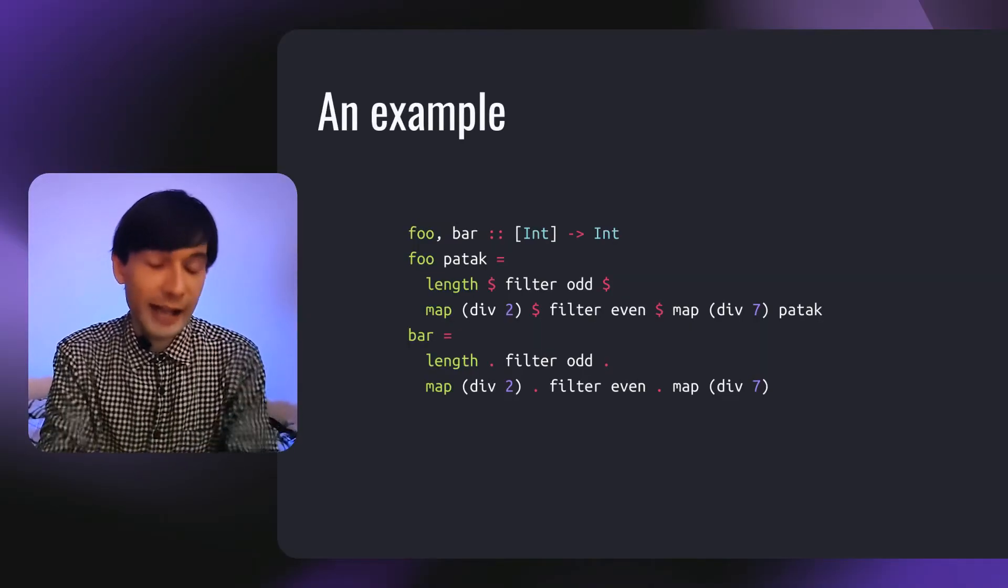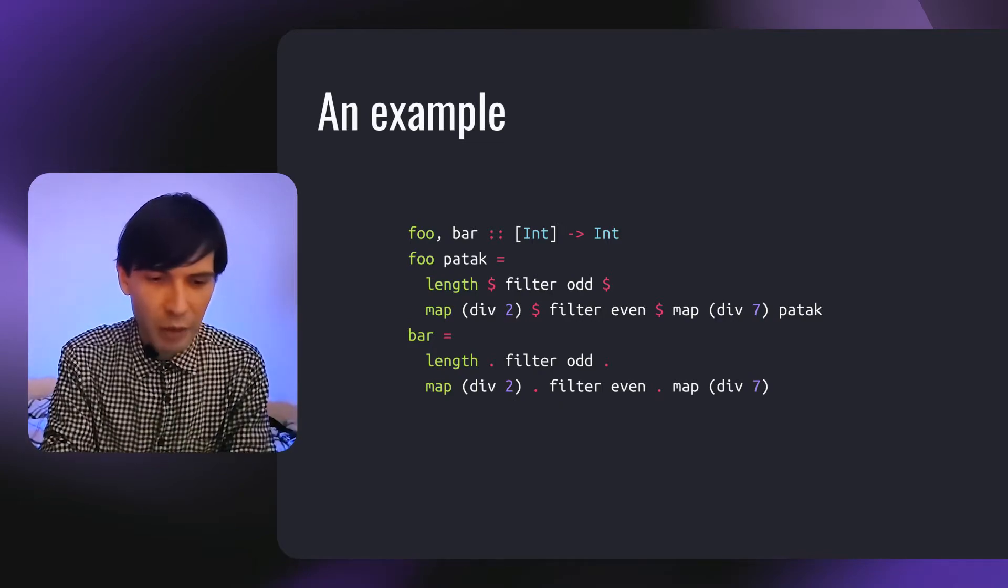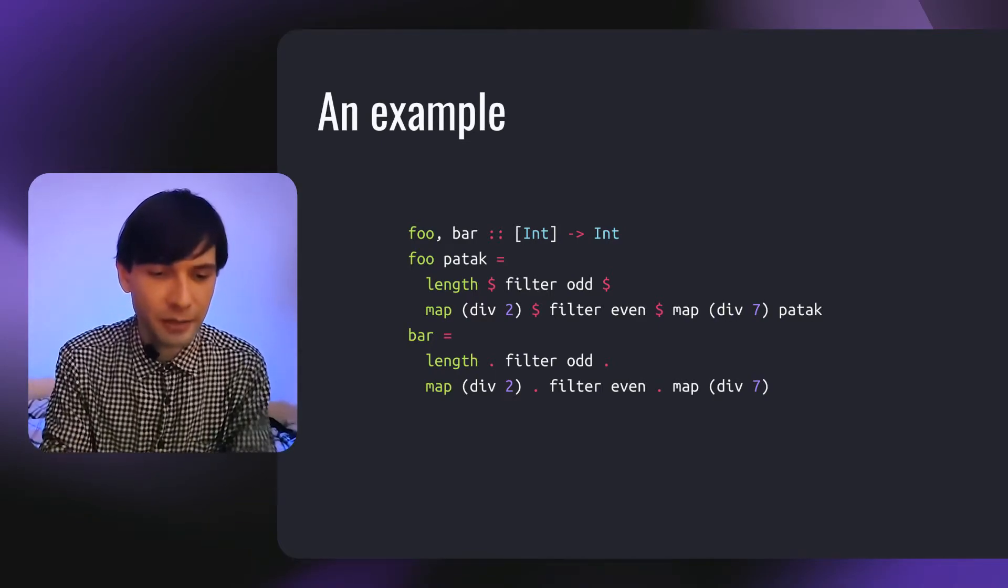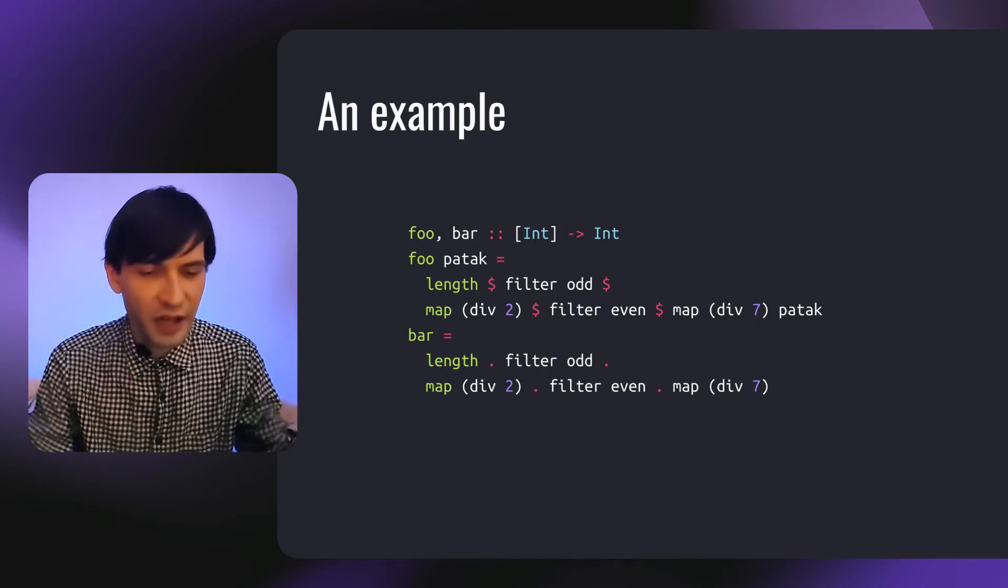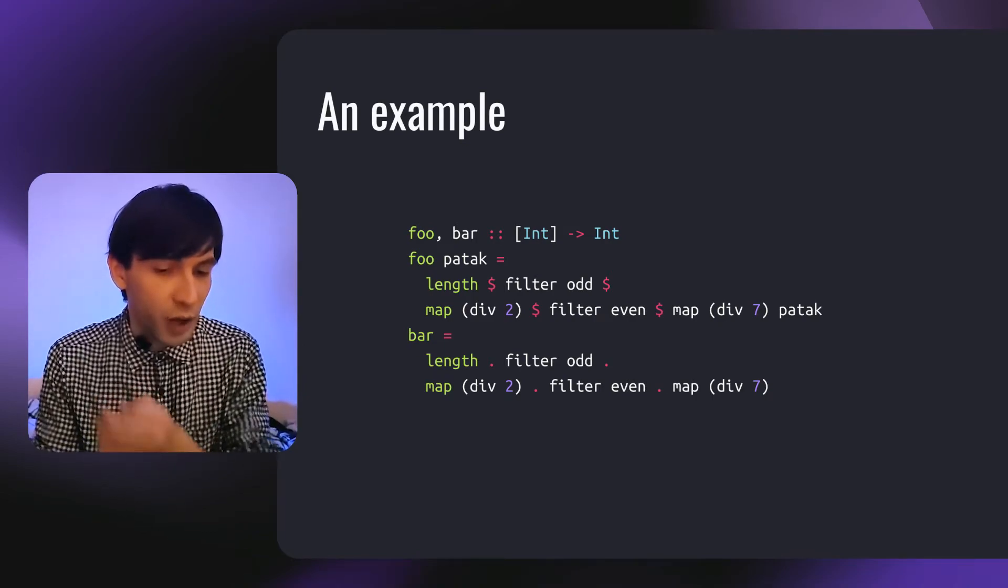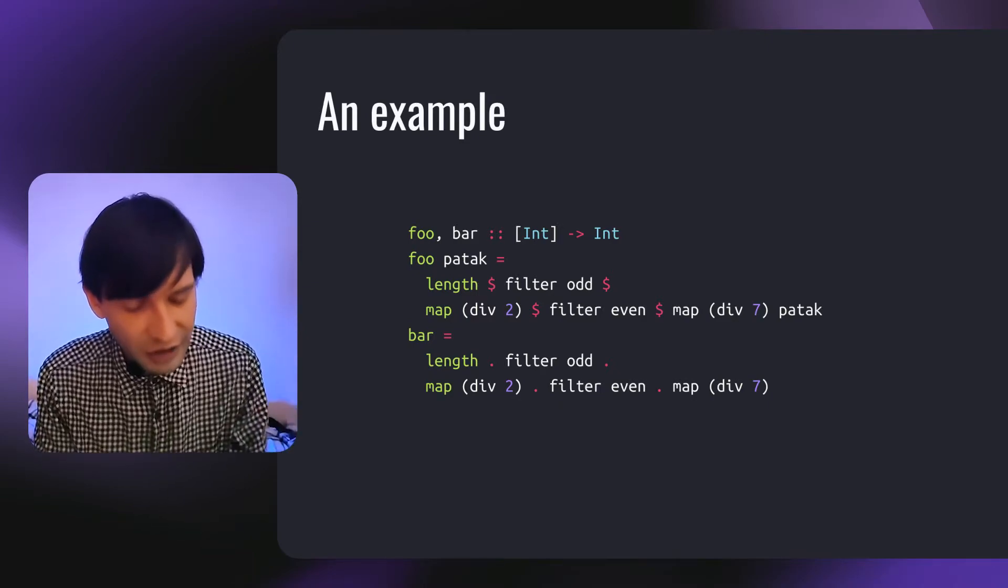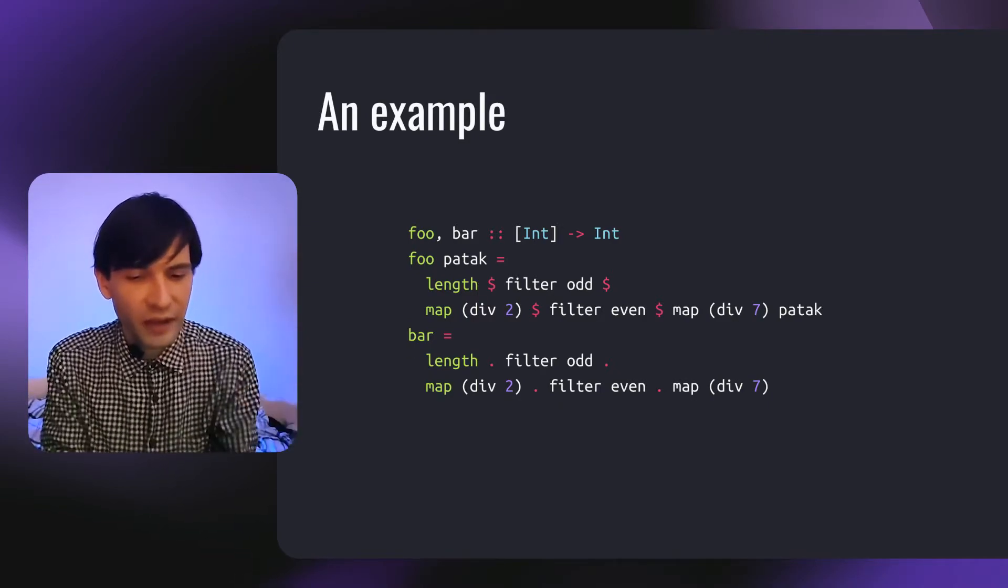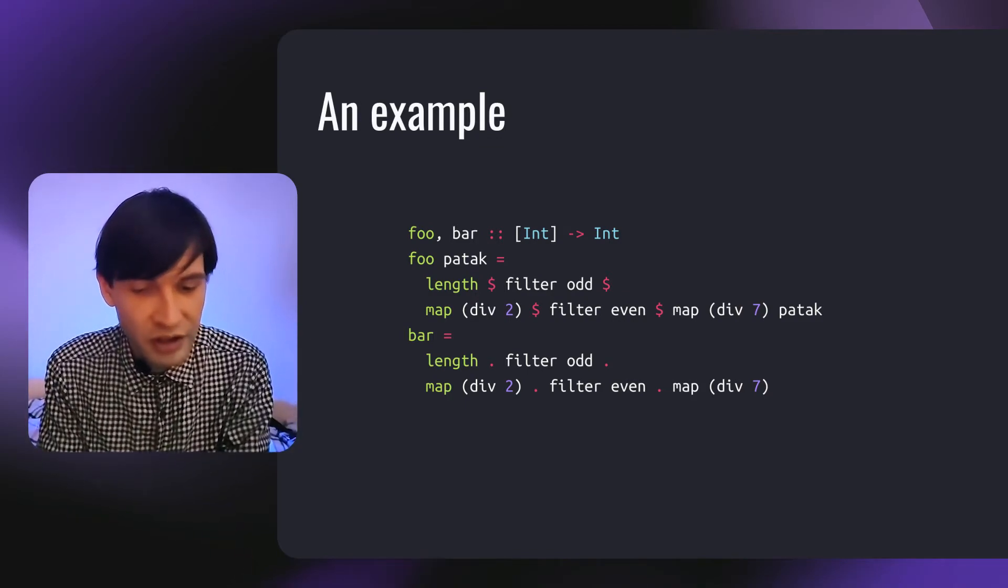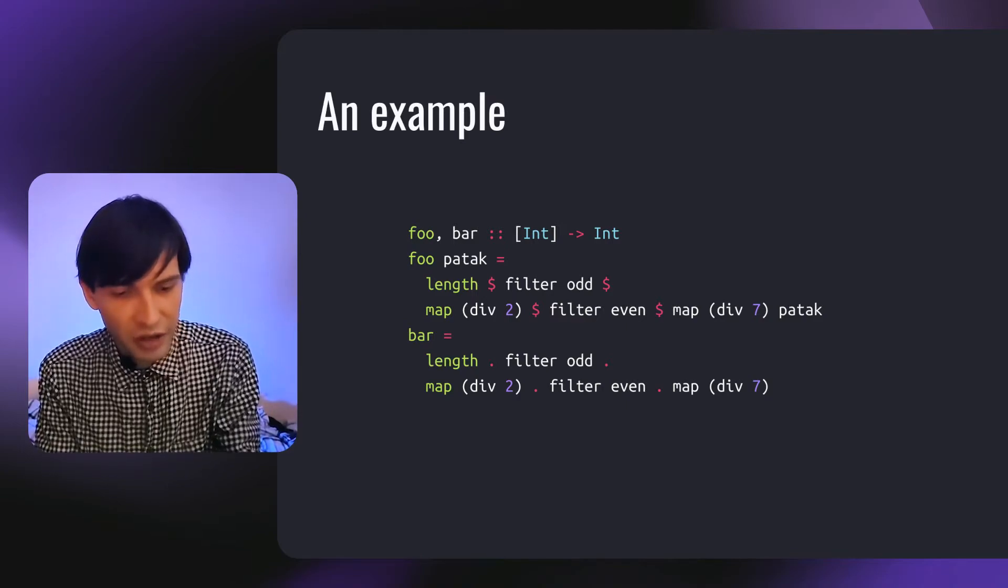Here's an example. Again, we have two functions and those functions are equivalent to each other. Here we take some list of elements of int and return some int. Here we have two equivalent versions. The first is written with dollars and the second written with dots. To me, the second example is a little bit more essential because this function is actually a composition of all those functions such as map div 7, filter even, map div 2, filter odd and length.